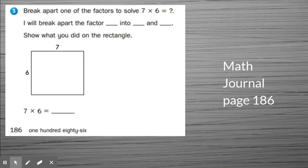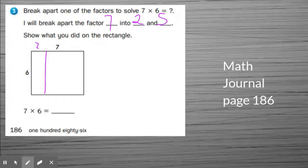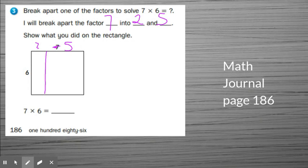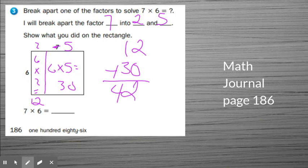Let's look at number 3. Break apart one of the factors to solve. I want to break apart the 7 into 2 and 5. 2 plus 5 is 7. Show what you did on the rectangle. I split it here. This becomes 2. This becomes 5. Next, I'm going to need to do my multiplication problems. 6 times 2 equals 12. 2, 4, 6, 8, 10, 12. Then I'm going to do 6 times 5. 5, 10, 15, 20, 25, 30. Finally, I'm going to add those two numbers together. 12 plus 30 equals 42. 6 times 7 is 42.